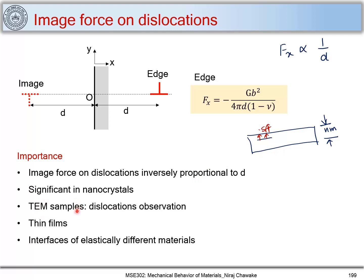Similarly, when we make TEM samples to observe dislocations or microstructures, the thickness observed under the microscope is in nanometers — typically around 100 to 150 nanometers. The surface will exert a force on dislocations in the sample, and they will reach the surface and get annihilated or removed from the sample. Therefore, the dislocations observed in a TEM sample may not always be representative of the bulk material. That is why image force plays an important role during TEM observations.